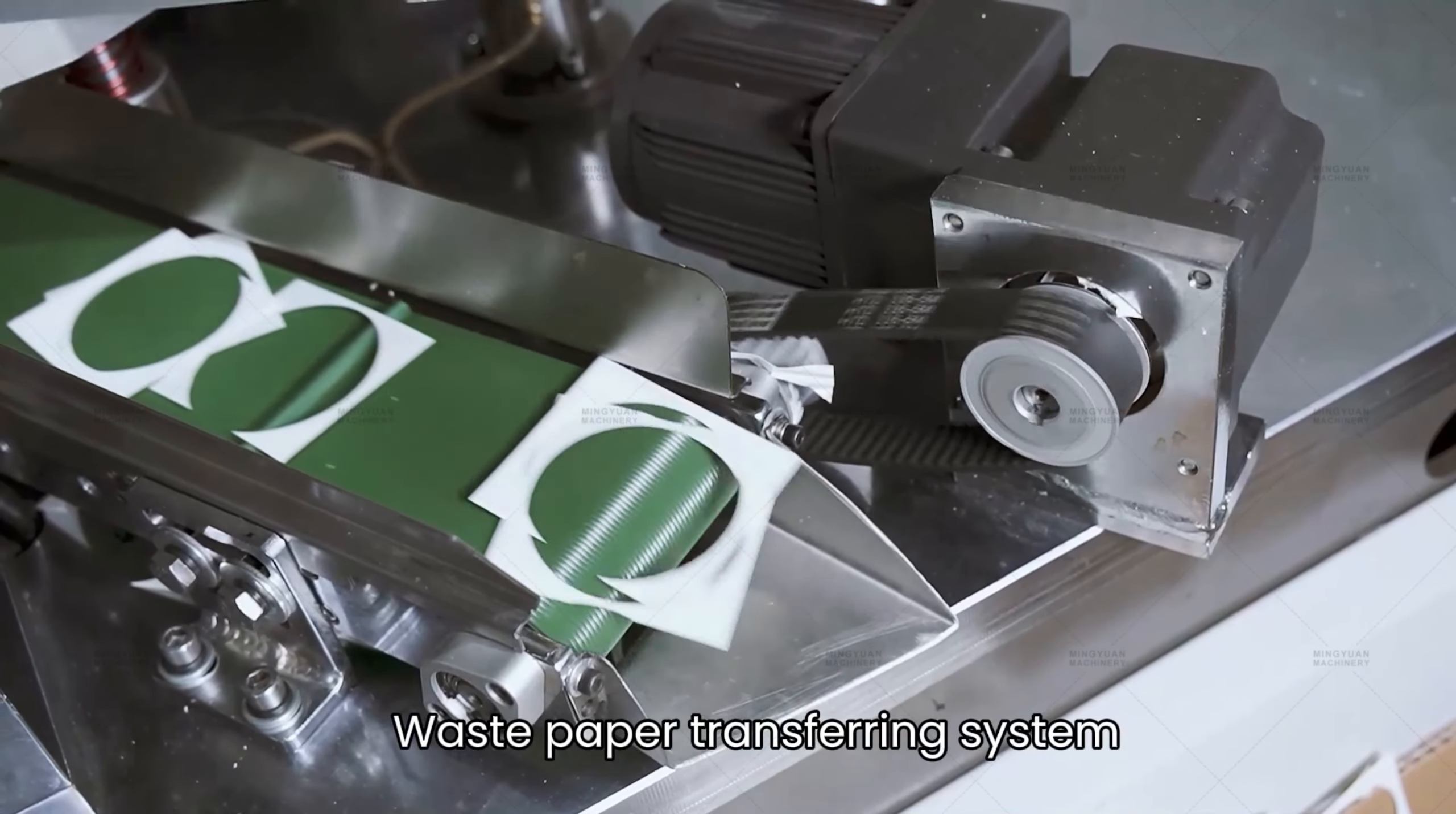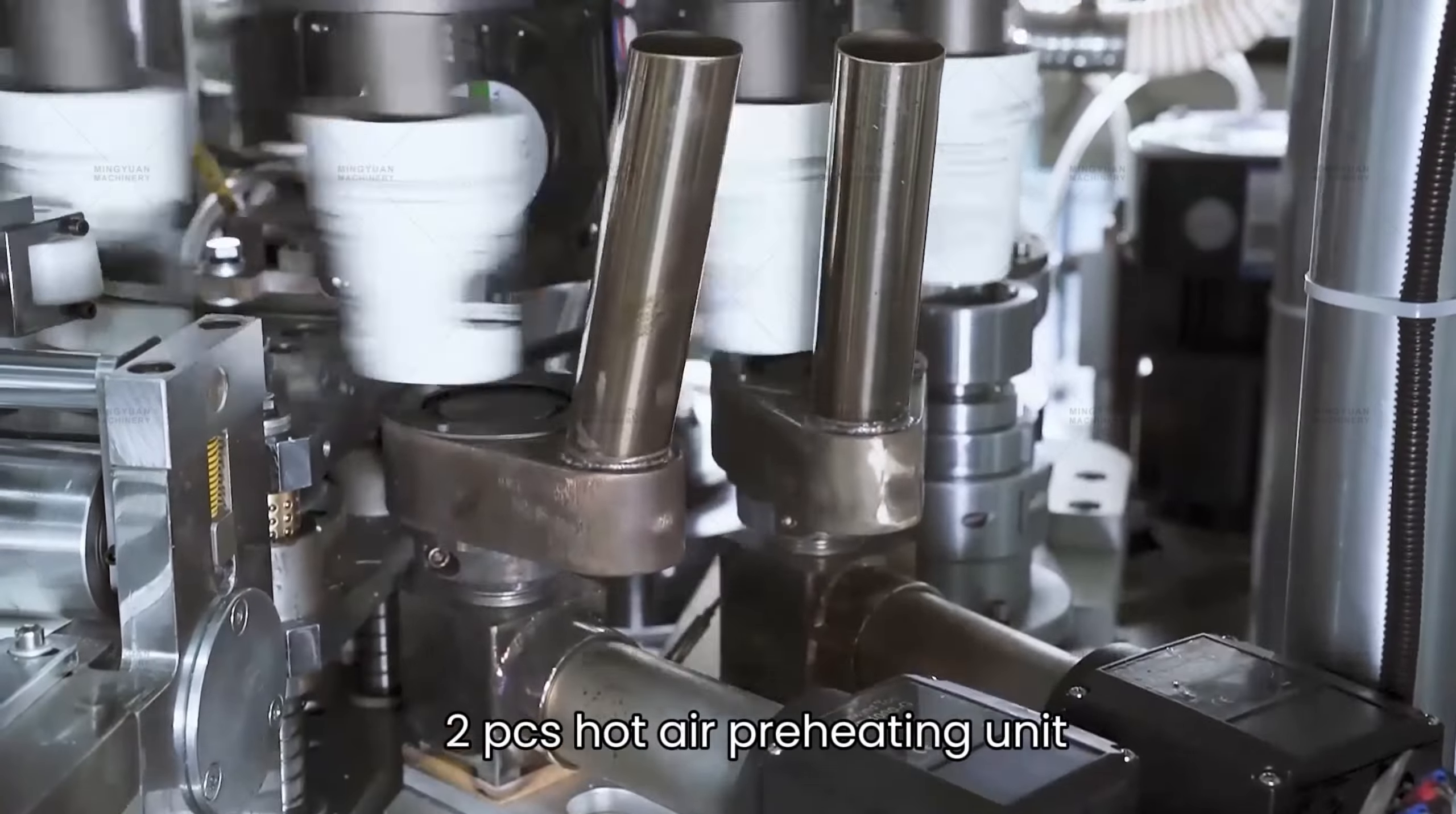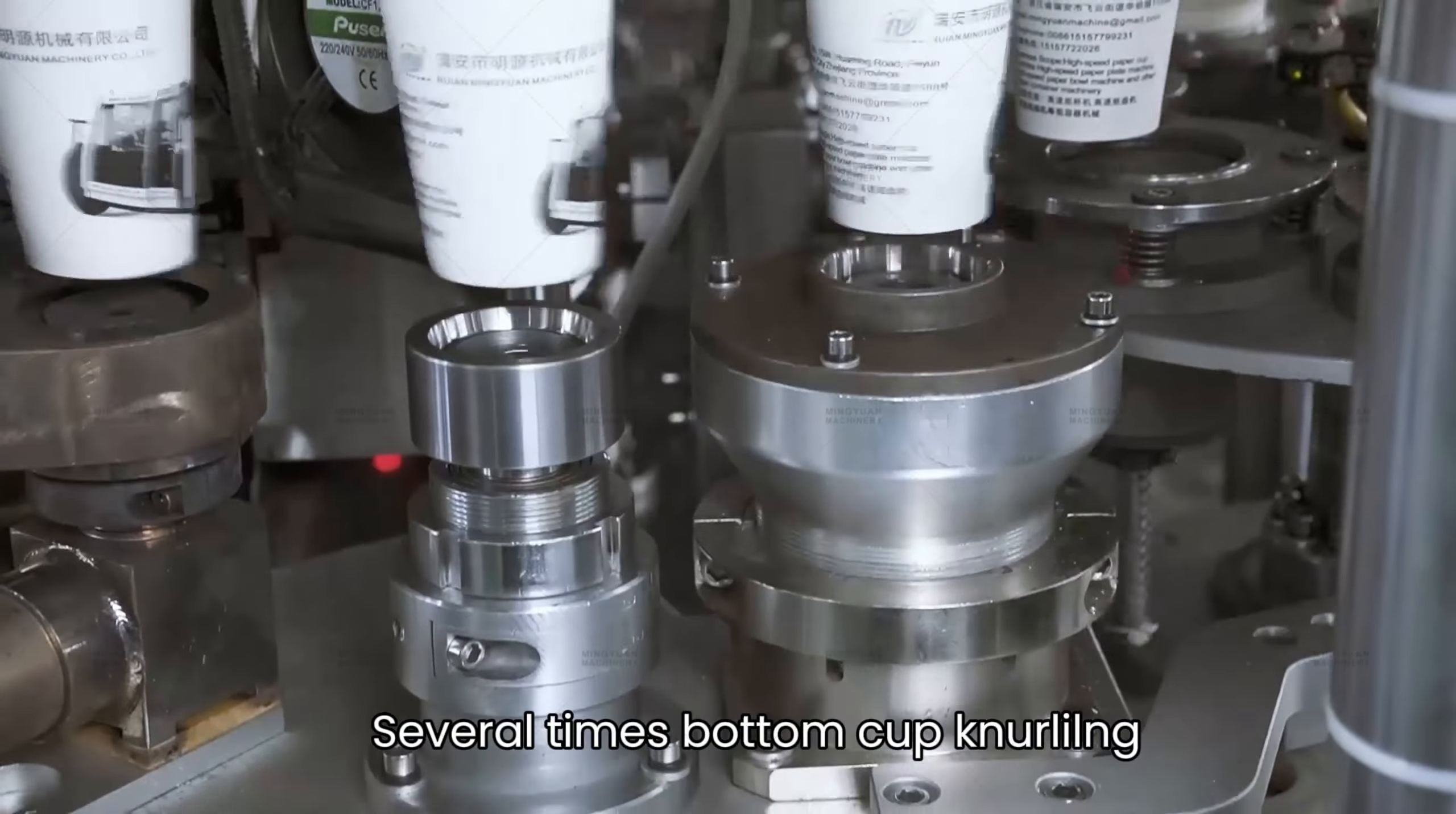The waste paper transferring system removes excess material. Two pieces of hot air preheating units are installed. The bottom cup undergoes several rounds of knurling.